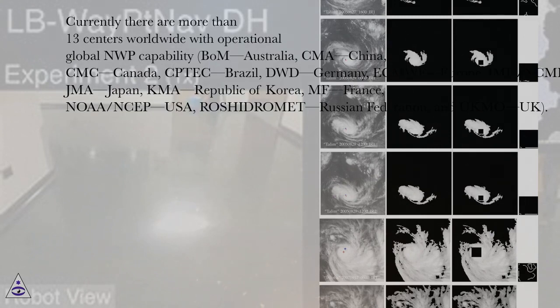Currently there are more than 13 centers worldwide with operational global NWP capability: BOM Australia, CMA China, CMC Canada, CPTEC Brazil, DWD Germany, ECMWF Europe, IMD-NCMRWF India, JMA Japan, KMA Republic of Korea, MF France, NOAA-NCEP USA, Roshydromet Russian Federation, and UKMO UK.